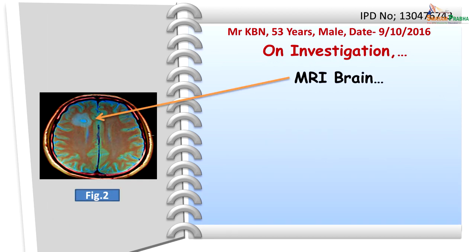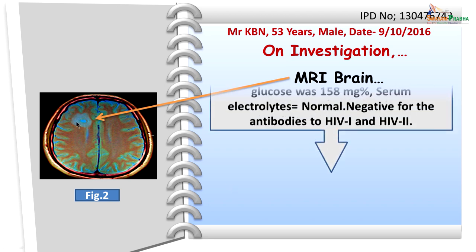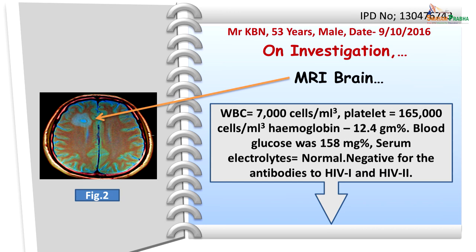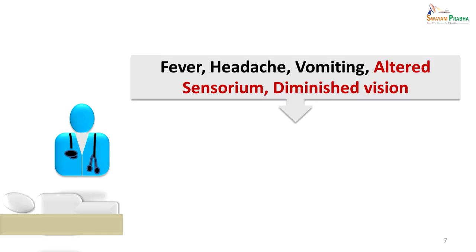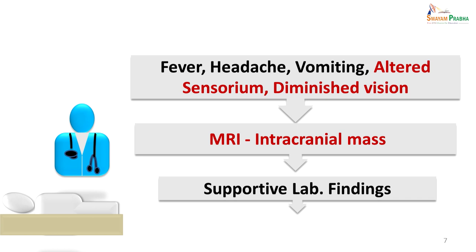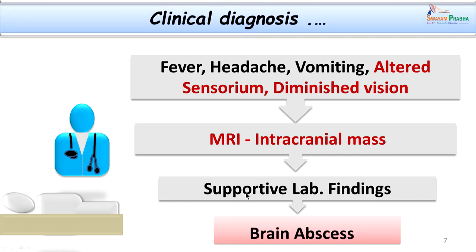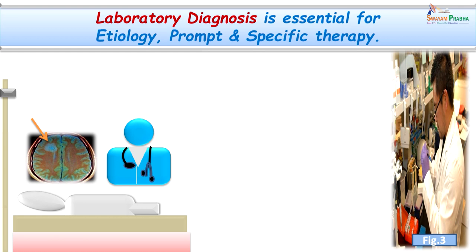We proceeded with a brain MRI which showed a space occupying lesion. The supportive laboratory findings indicated a chronic infection. The patient had fever, headache, vomiting, and altered sensorium in the form of altered speech, weak motor reflexes, and diminished vision. MRI gave the important finding of a space occupying lesion, and supportive lab findings were also in favour of this diagnosis. The diagnosis is brain abscess.